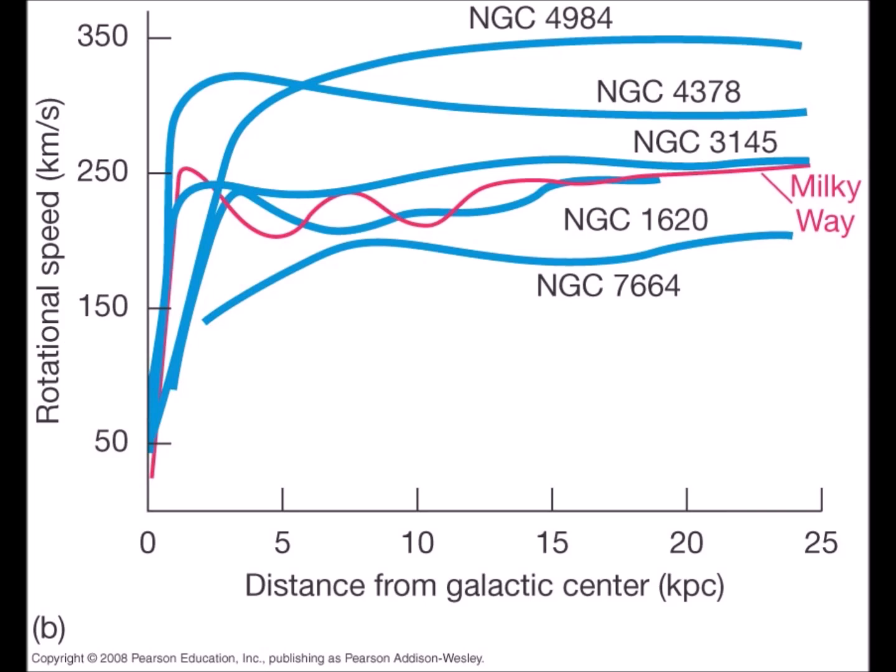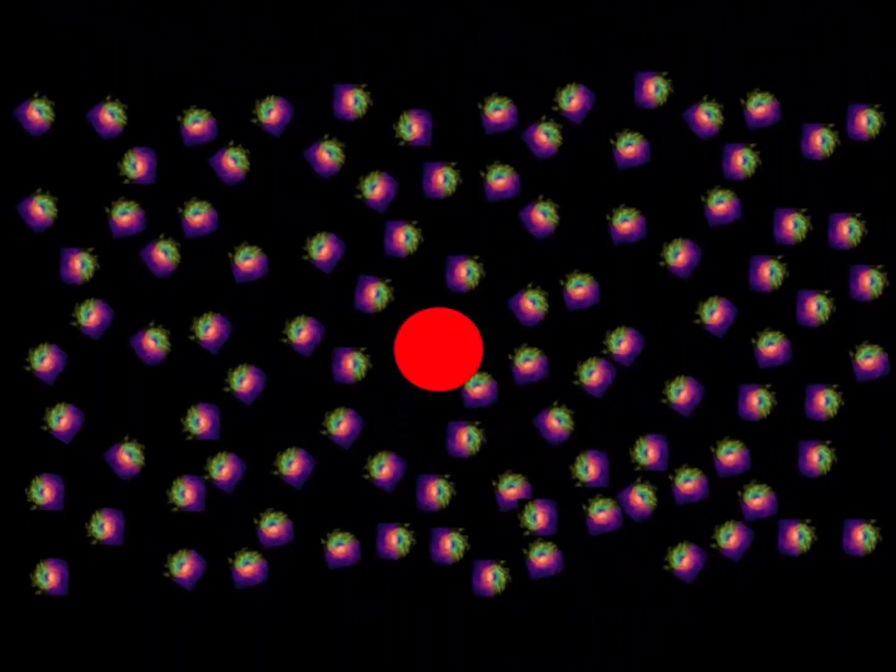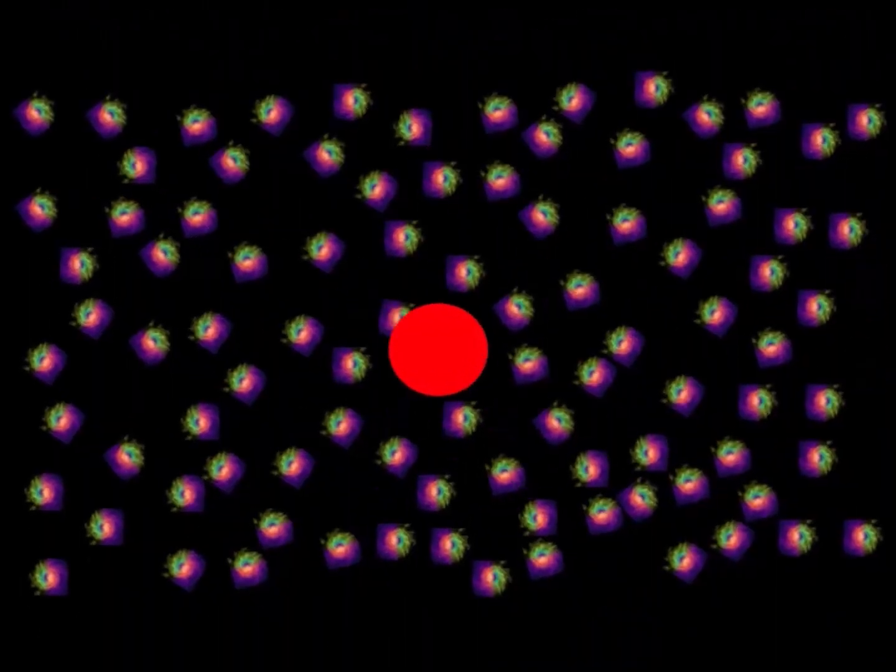These mysterious chameleons imagined to explain the rotation curve of galaxies which does not conform to Kepler's laws. Chameleons gradually aggregate in the particles.